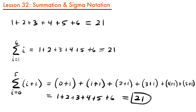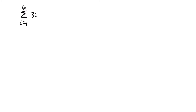Now you can see how sigma notation is used to find the sum of a series of terms, and it can get more complicated by changing what happens to i. Before we look at more examples, let's talk about some of the properties of this notation. Our first rule: if we have the sum from i equals 1 to 6 of 3 times i, we can pull out this constant to the outside. We rewrite it as 3 times the summation from i equals 1 to 6 of i.